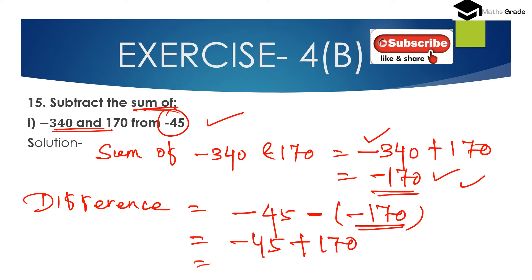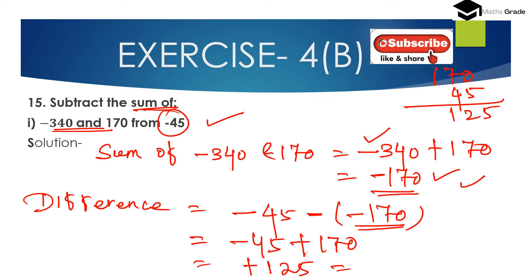When we add two integers with different sign, we have to subtract the smaller integer from the bigger integer. Bigger integer is 170 and smaller integer is 45. Now 170 minus 45 equals 125. And we have to place the sign of the bigger integer — 170 is a positive integer — so the answer is positive 125. So subtracting the sum of minus 340 and 170 from minus 45 gives 125.